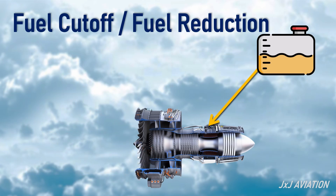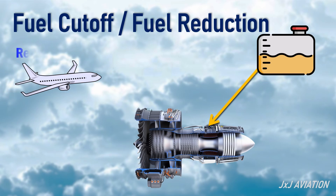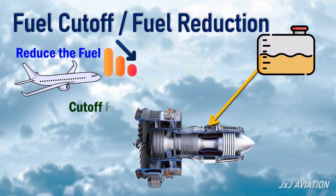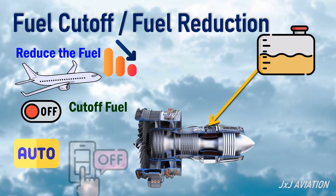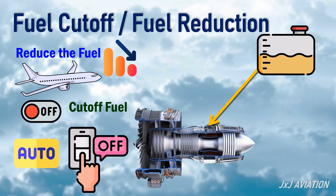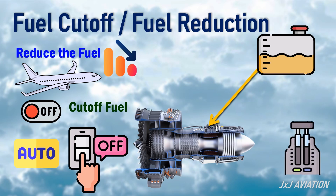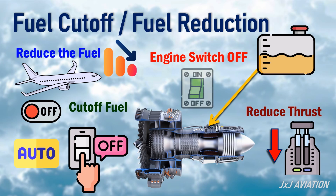When an aircraft is in flight, due to some abnormalities, the fuel may have to be reduced or completely cut off from the engines. This may be done automatically or manually. When the engine is running, if the thrust is reduced, the fuel flow to the engine will be reduced. If the engine switch is set to off, the fuel flow is cut off to the engine.